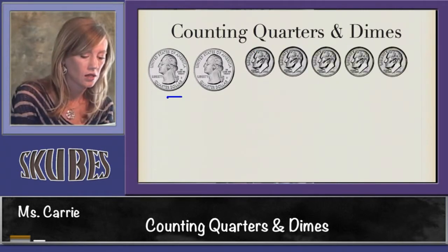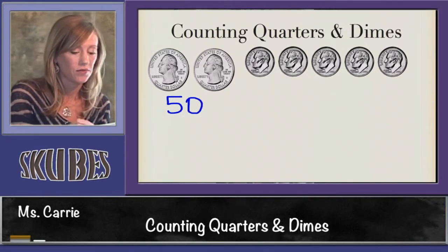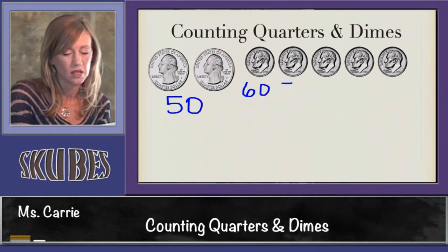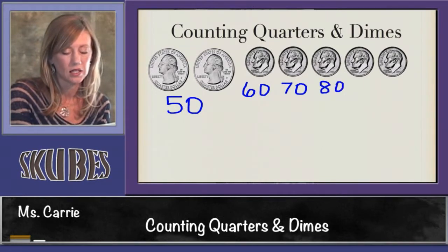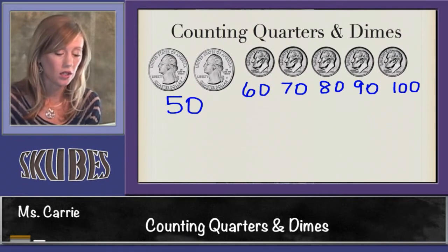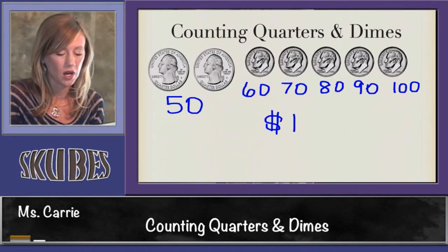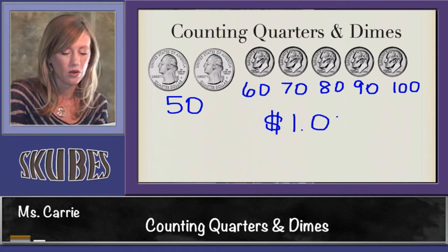Let's look at another group of coins. We know that two quarters are 50 cents. Now we need to add our tens: 50, 60, 70, 80, 90, 100. We don't say 100 cents — we say one dollar, because 100 cents is equal to one dollar. So we draw a dollar sign and write one, then a decimal point and two zeros that represent no change leftover.